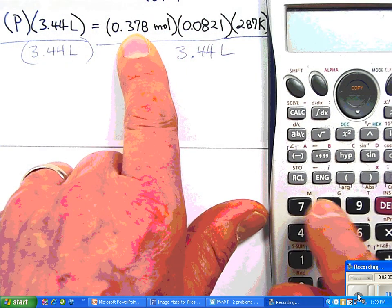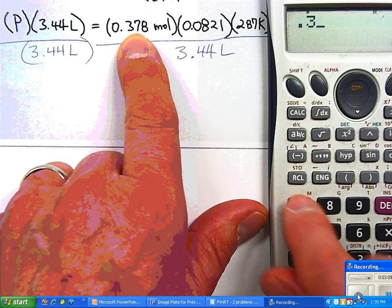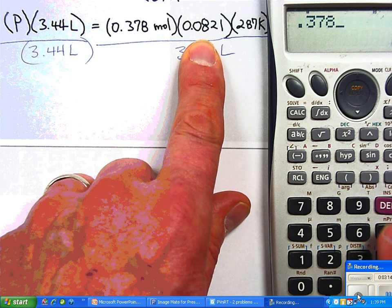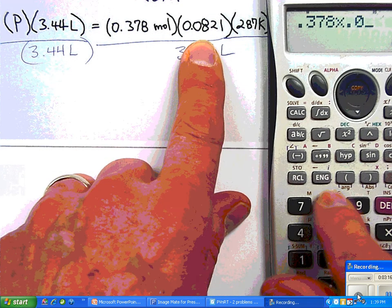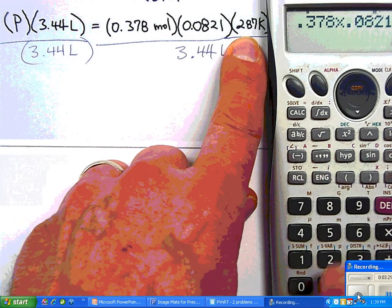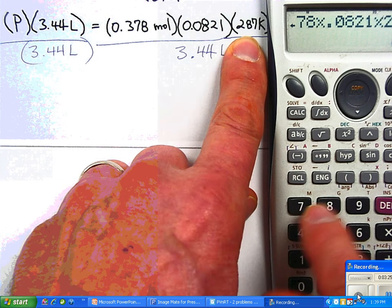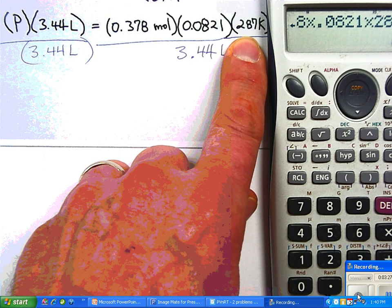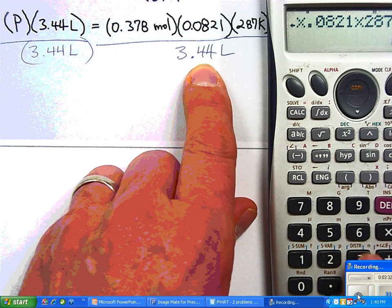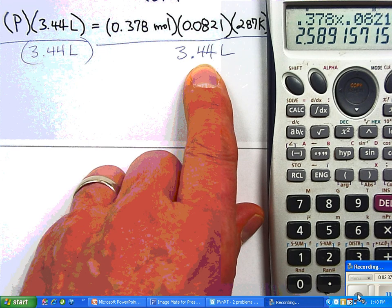We have 0.378. Calculators work better when they're turned on. And we're going to multiply that by 0.0821. And because this guy is on the top of the fraction, we multiply again by 287. And now we can just do our divide by hitting the divide sign, 3.44.